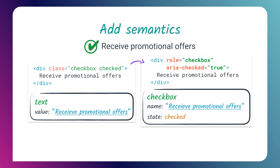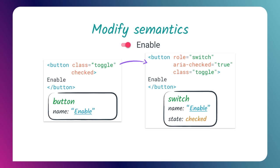Now that you understand what ARIA is and the basics of how it works, let's cover what ARIA allows you to do in your applications. As we saw in the checkbox example, ARIA can add semantics to an element where no native semantics already exist. Take a div element — it has no built-in semantics — but we can use ARIA to give it a role and a checked state, building a custom checkbox or radio button.